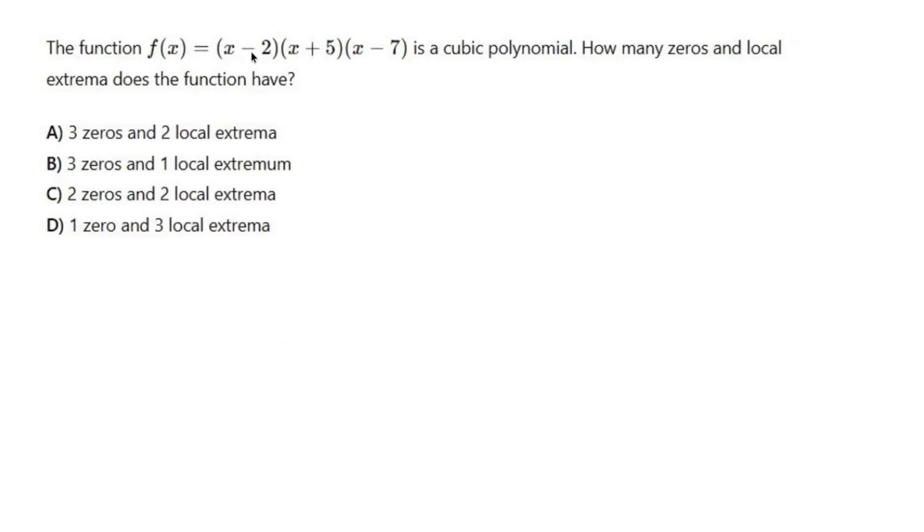The function f of x equals x minus 2 times x plus 5 times x minus 7 is a cubic polynomial. I see that. How many zeros and local extrema does the function have?